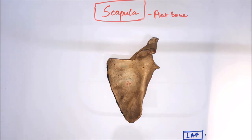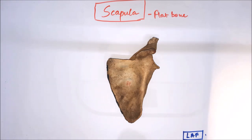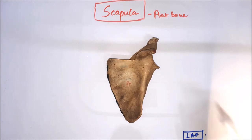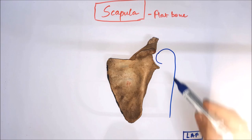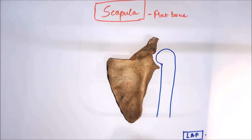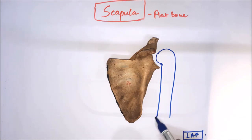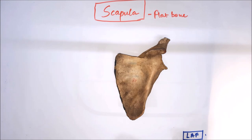Let us see the bone scapula. It is a flat bone of the upper limb, lying just behind or posterior to the thoracic wall. It attaches with the clavicle via the acromion process, forming the acromioclavicular joint, which is a flat variety of joint. It also attaches with the humerus, forming the shoulder joint, which is a ball and socket variety of joint.